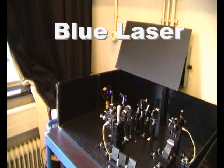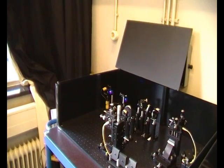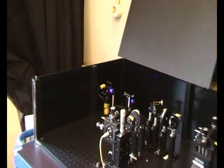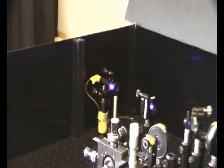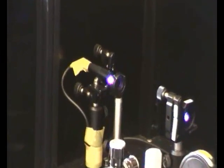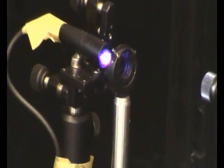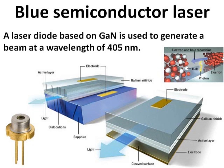The first element in the setup is a blue laser diode. It emits at a wavelength of 405 nm with a power of 50 mW. A lens in front of the laser diode focuses the laser beam on the non-linear crystal. Blue laser diodes are based on gallium nitride, a large bandgap semiconductor. Electrons and holes recombine in the active region to generate photons.